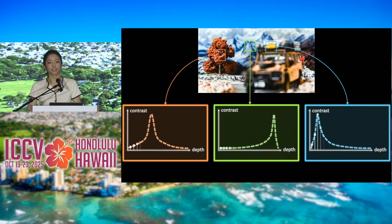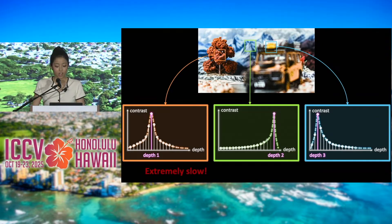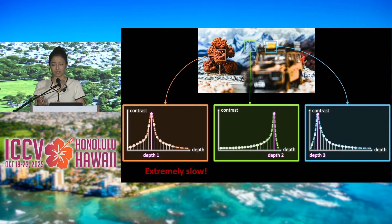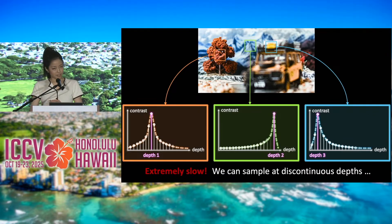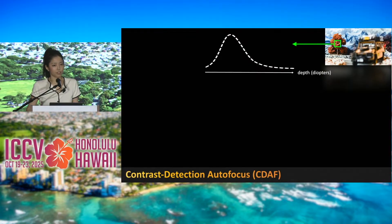A naive strategy is to exhaustively search over the entire depth range to find the point with maximum contrast. This approach is similar to focus stacking and is extremely slow, requiring a large number of images. Unlike a conventional camera that changes focus continuously, our prototype allows us to change focus in a discrete way. We therefore propose a more efficient strategy: spatially varying contrast detection autofocus, or CDAF, based on the observation that the contrast profile with depth is often unimodal.